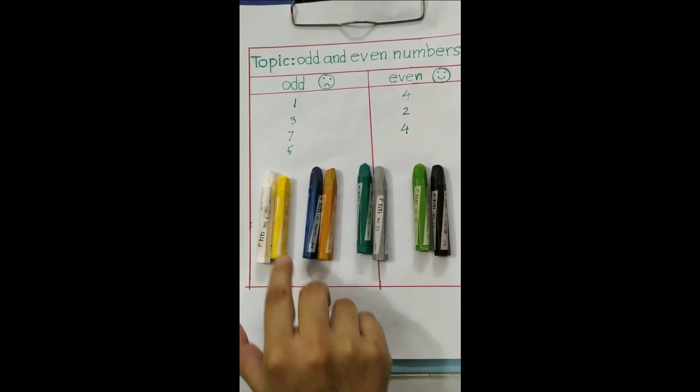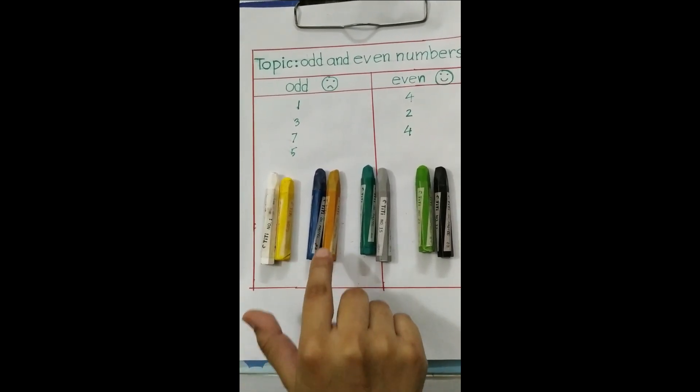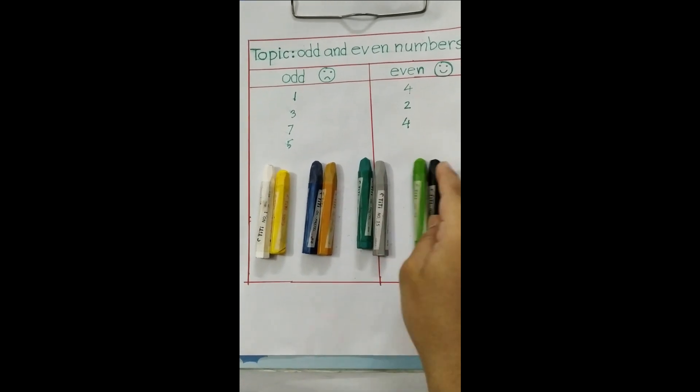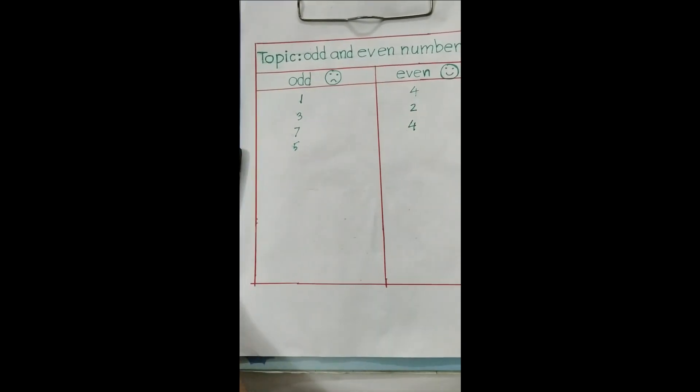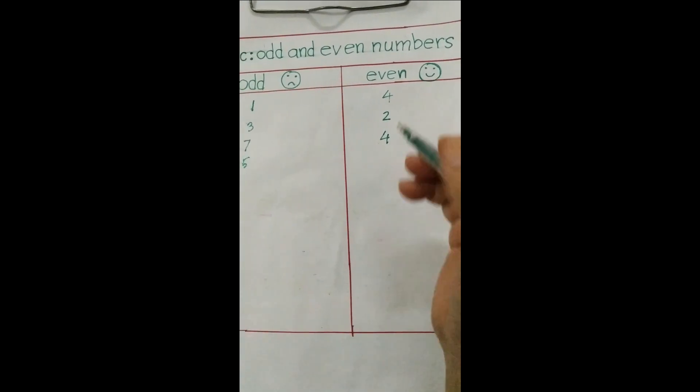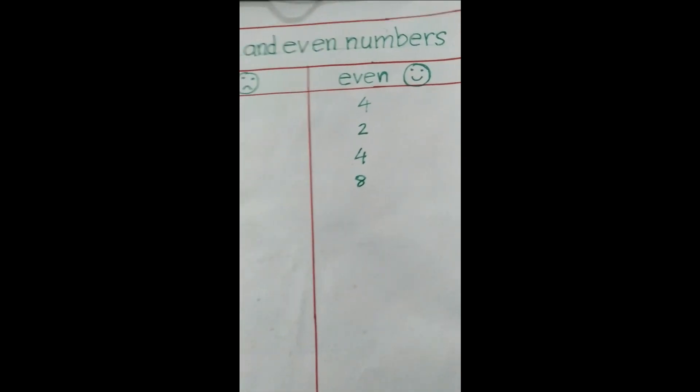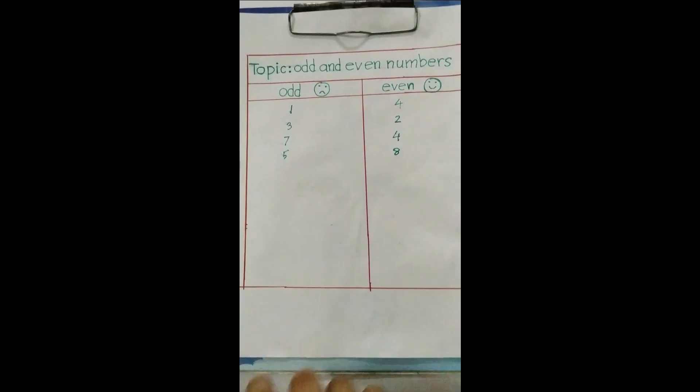So let's count: one, two, three, four, five, six, seven, eight. Eight is even. That means eight is happy. We will write here eight.